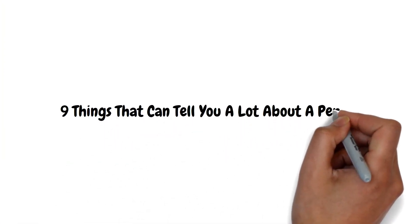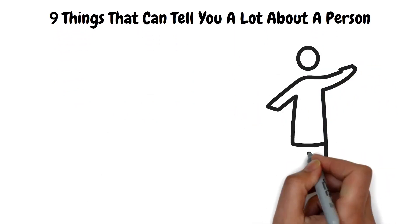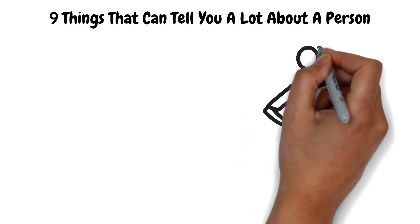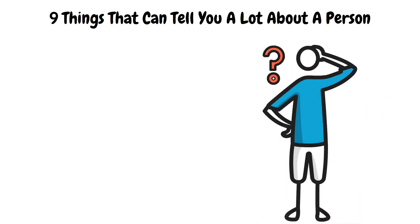9 Things That Can Tell You A Lot About A Person. Understanding other people can be very difficult because humans are complex. They also put on different faces, which makes it even harder to assess their true personality.